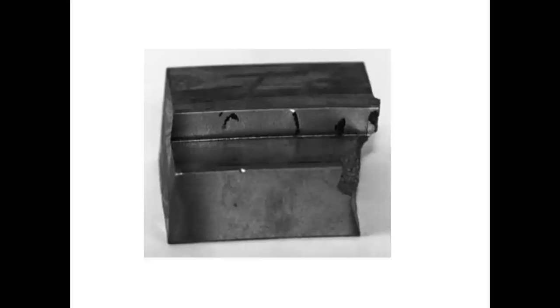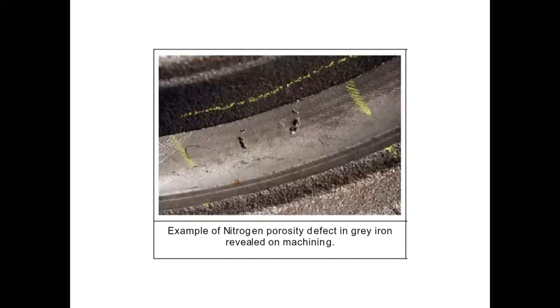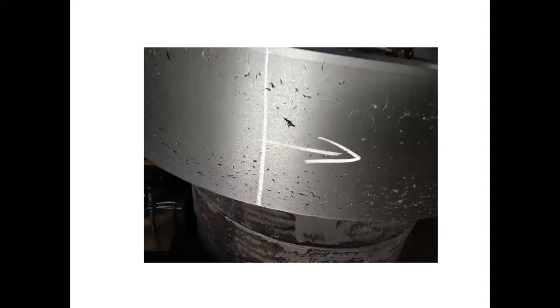These are some of the pictures for the nitrogen fissure defect on various types of castings. You can see these defects on the casting. This is an example of nitrogen porosity defect in gray cast iron. Here are another few casting examples where we can see nitrogen fissure defect.